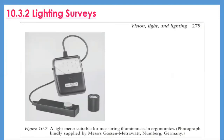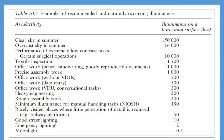Regarding lighting surveys: ergonomists are not illumination engineers, but they should be able to use a light meter. Figure 10.7 shows an example of a light meter. Light meters can be used to measure illuminance levels on work surfaces in offices, shops, factories, etc., and the readings can be compared with levels recommended in published standards as shown in Table 10.3. For example, a clear sky in summer has an illuminance of 150,000 lux.